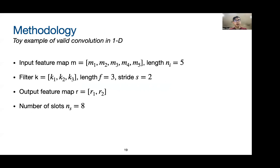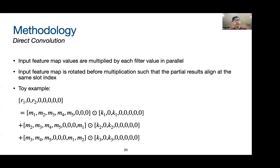I'll present our methodology using a toy example in one dimension. We have an input feature map M of length 5, a filter K of length 3 and stride 2. The output feature map R is of length 2. We also assume the number of slots is 8. The first way to compute a convolution is direct convolution, where the input feature map values are multiplied by each filter value in parallel. The input feature map is rotated before being multiplied such that the partial results align at the same index. K1, K2, and K3 are encoded into separate ciphertexts and the input feature map ciphertext is rotated before it is multiplied with the different filter values.